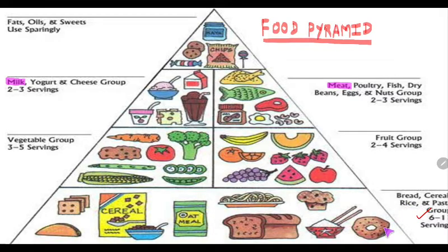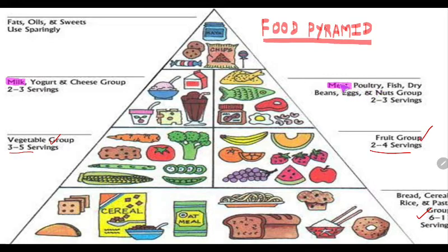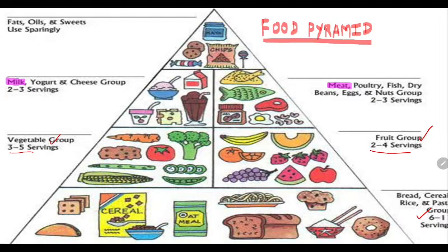Next come vegetables — 3 to 5 servings — and fruits — 2 to 4 servings — on the same level of the pyramid. Then comes the milk and milk products and meat and poultry group. At last, very sparingly used, are fats, oils, and sweets. So to summarize: bread, cereal, and rice — 6 to 11 servings; vegetables and fruits — second level; meat and milk products — next; and fats, oils, and sweets at the very top.